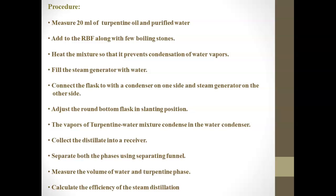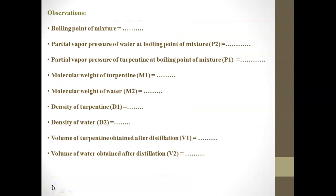Allow the vapors of the turpentine-water mixture to condense in the water condenser. Collect the distillate into the receiver, then separate both phases using a separating funnel. Measure the volume of the water phase and the turpentine phase, and finally calculate the efficiency of steam distillation.